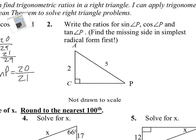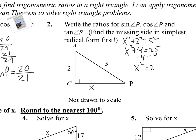We want to find the ratios for cosine and tangent of P again, but notice we don't have a side — we need to find that first. So we're going to use the Pythagorean theorem. X squared plus 2 squared equals 5 squared. We subtract 4 and get X squared equals 21. Since X squared equals 21, we square root both sides. We want this in simplest radical form.